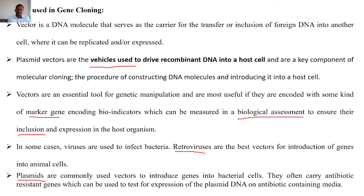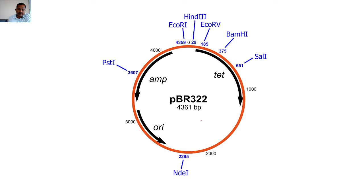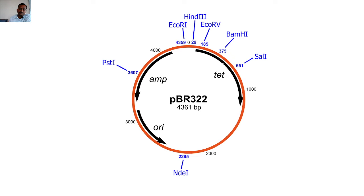For example, we have PBR vectors. P stands for plasmid. B stands for the scientists Bolliore and Roderick, and 322 is the serial number. So in PBR322, we have the structure with ORI — the origin of replication. ORI is the origin of replication, which enables plasmid replication.